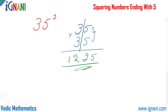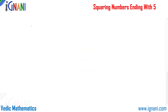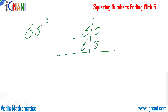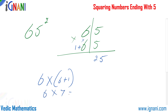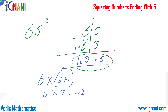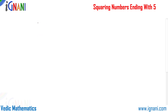Let us find the square of 65, which is 65 into 65. First, 5 into 5 is 25. Then take 6 and add 1 to get 7, so 6 into 7 equals 42. Prefixing 42 to 25, the square of 65 is 4225.